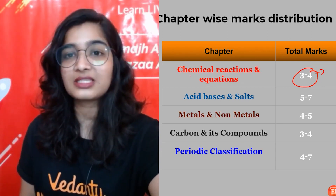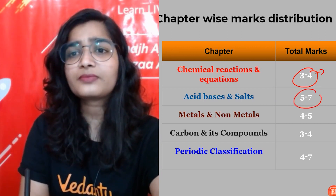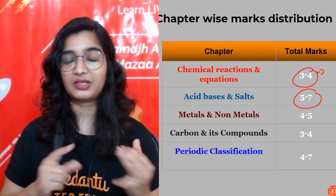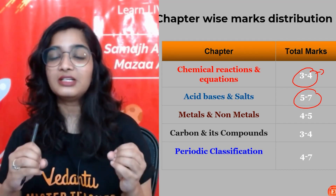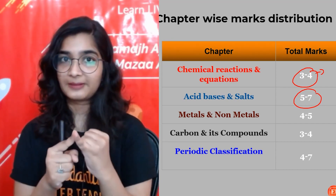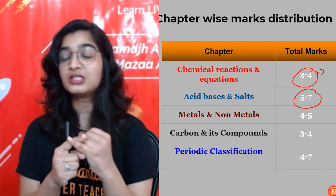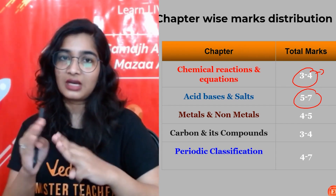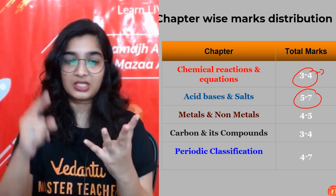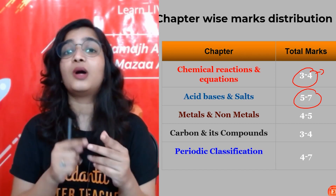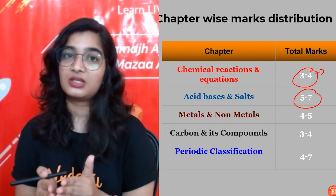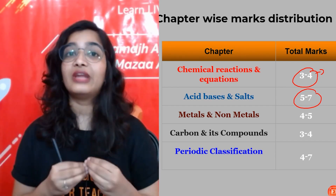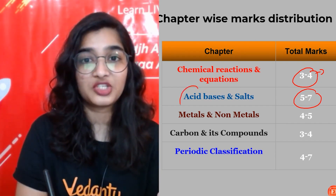Chapter 2 — Acids, Bases, and Salts: expect five to seven marks. Important topics include the chlor-alkali process, uses of common salts, and how substances like sodium bicarbonate, washing soda, and bleaching powder are obtained. Also important: neutralization reactions, reactions between acids and bases, and reactions of acids — these are super important.